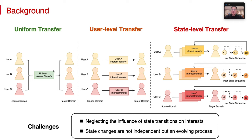Recognizing this, our paper introduces a state-based transfer network designed to adaptively transform user interests between domains, accounting for changes in user state.